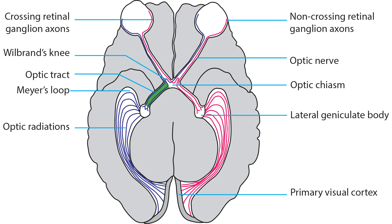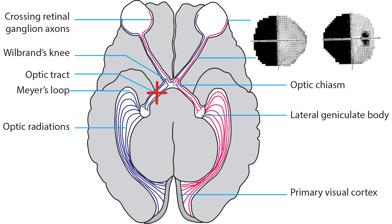Once the optic pathway has passed through the optic chiasm to enter the optic tract, the pattern of visual field defects changes again. Hemianopic defects will now be present in both eyes, and they will be homonymous — that is, on the same side of visual space in both eyes. Such defects are called homonymous hemianopias. They will be reviewed with the retrochiasmal portion of the vision pathway in Part 5.